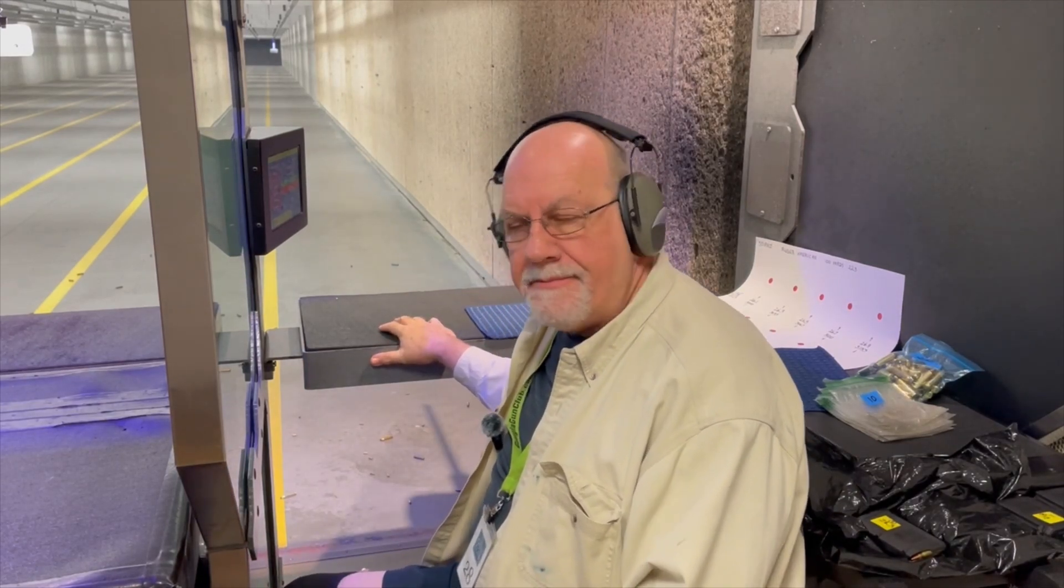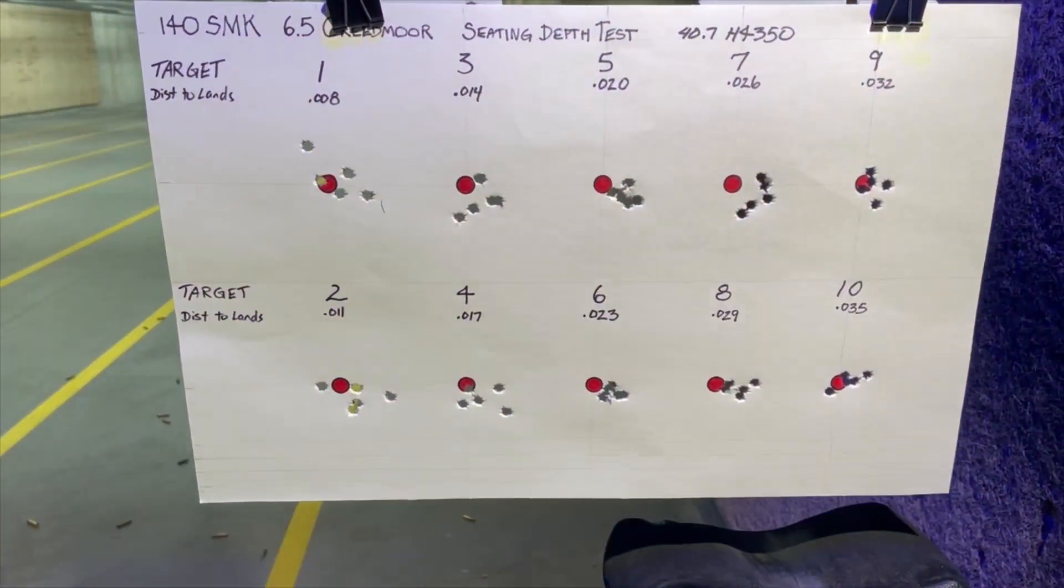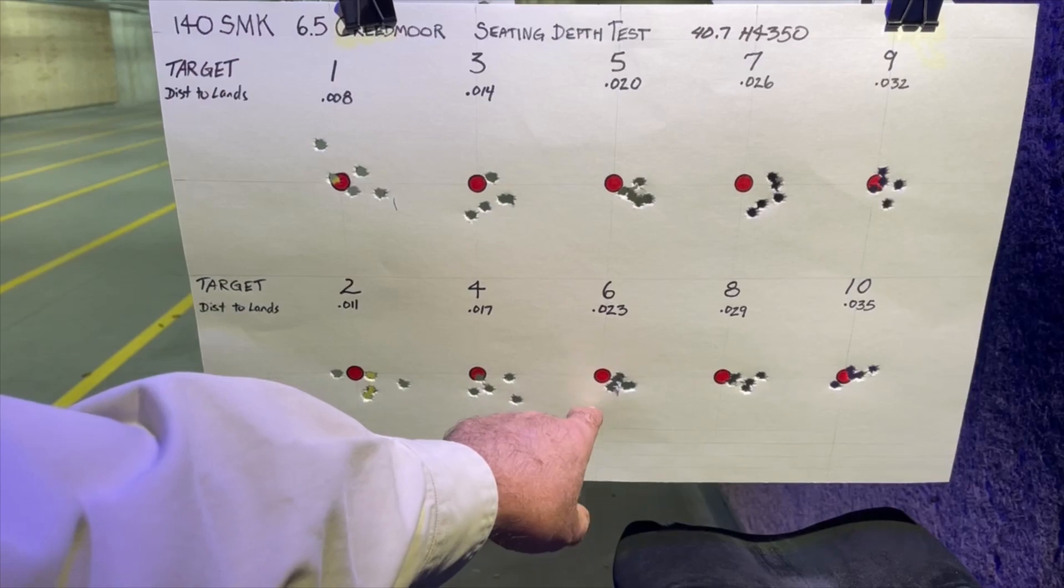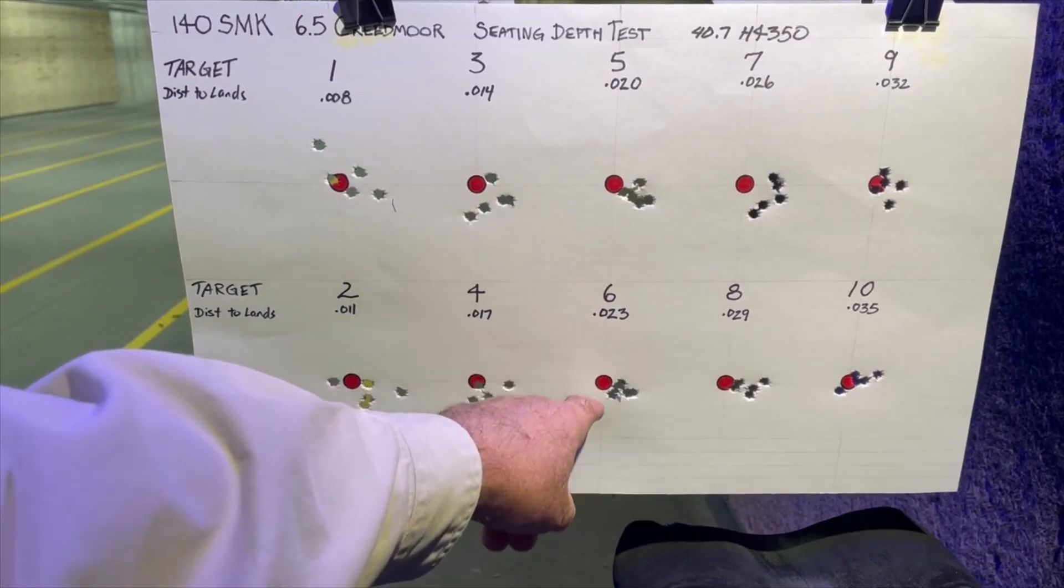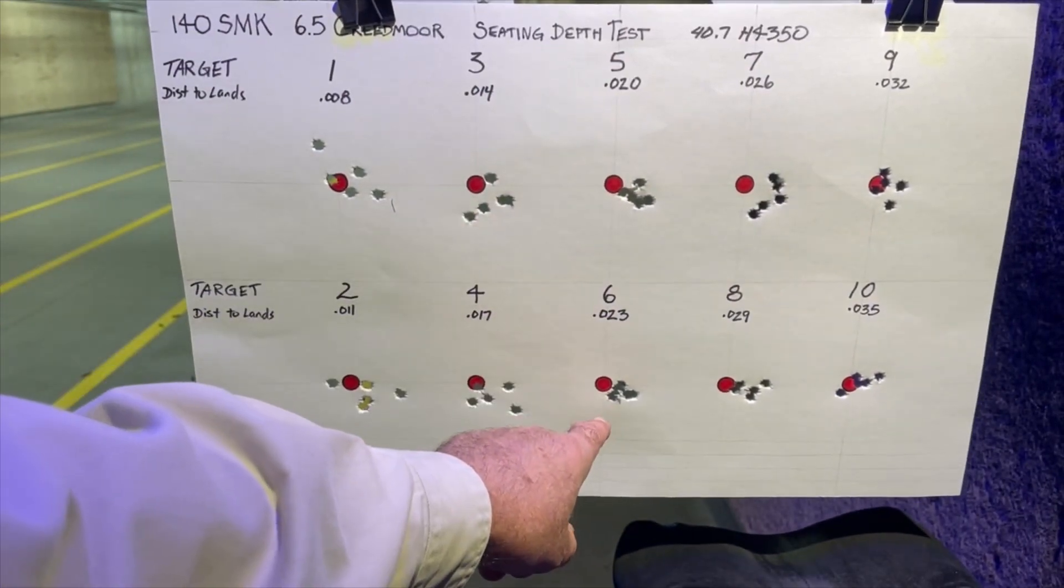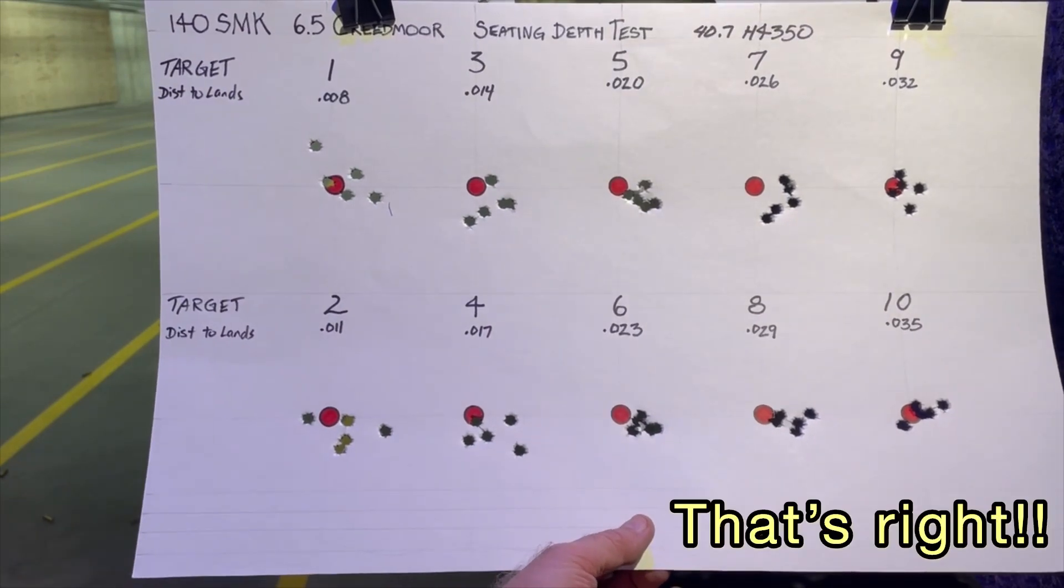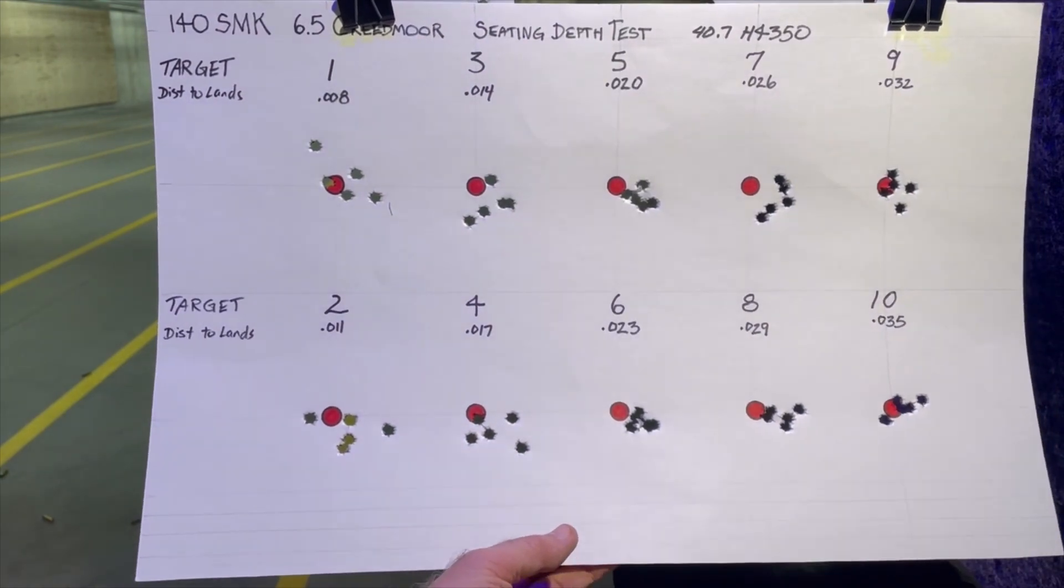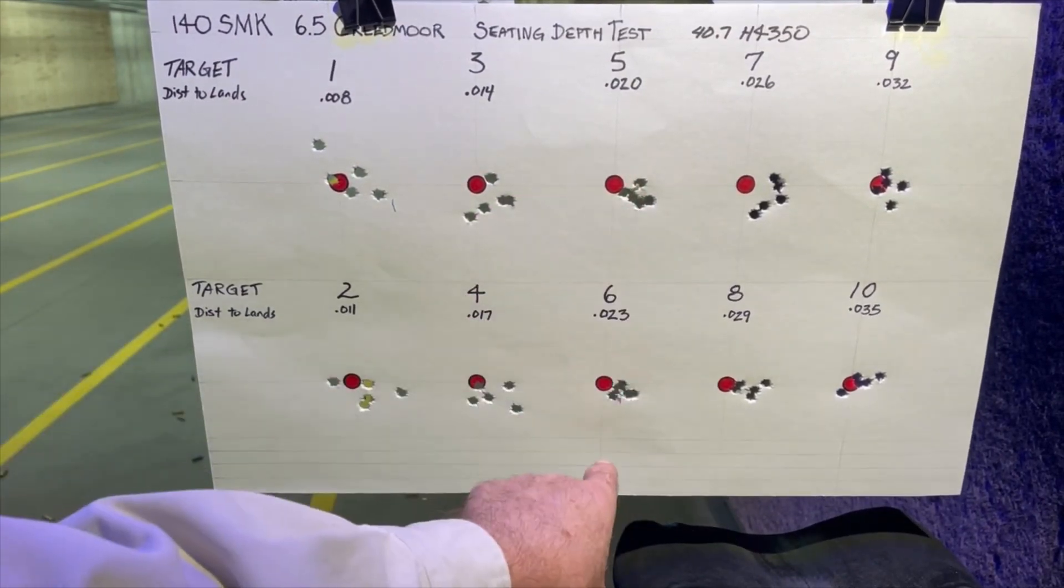All right, let's bring them in and take a look. So it looks like number five and number six are my tightest groups. Those are 20 and 23 thousandths off of the lands. Oddly, if I'm not mistaken, this is about where the recommended overall length of the cartridge falls at 2.8 inches. So we take these home, we'll measure them, we'll see how they compare. It definitely looks like we have a winner right here between 20 and 23 thousandths off of the lands.